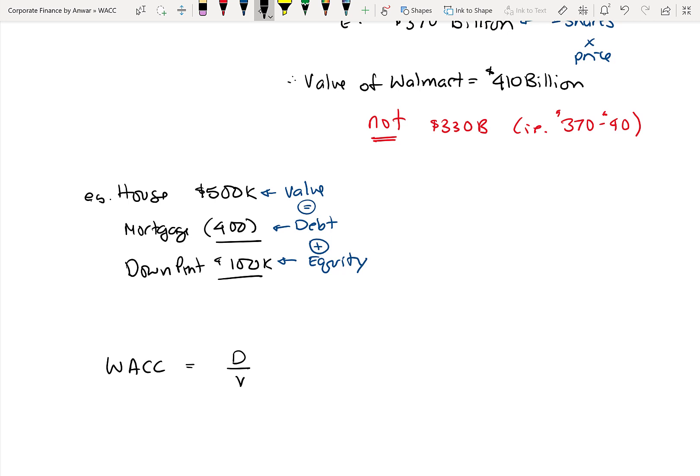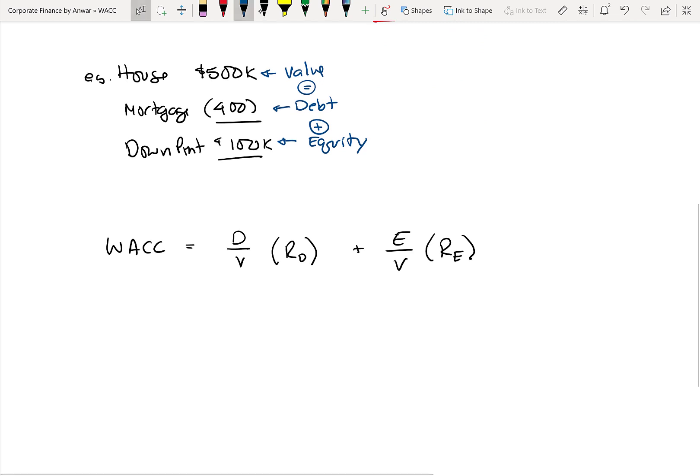So what's the formula for the weighted average cost of capital? It's D over V times RD plus E over V times RE. Now, the two Rs are just the cost of each of the types of capital. So RD is the cost of debt. So if you took a bank loan at 4%, that is the cost of your debt, 4%. RE is the cost of equity, which is what shareholder returns are expected. So if your shareholders want 7% or 8% as a return, that's your cost of equity.